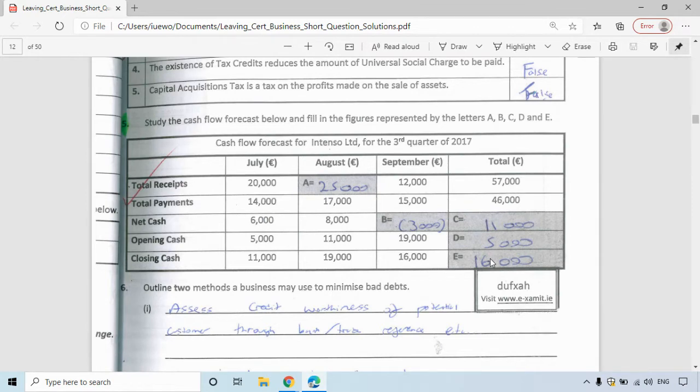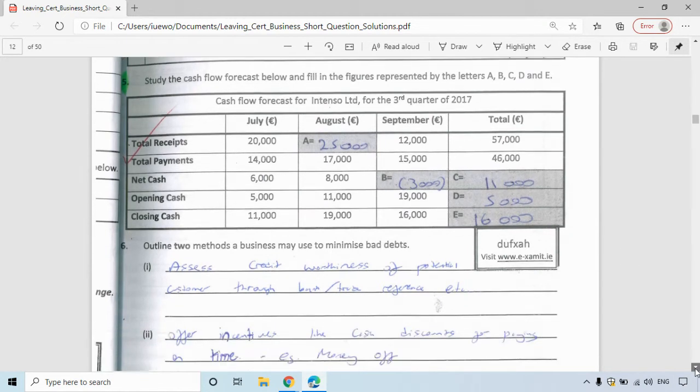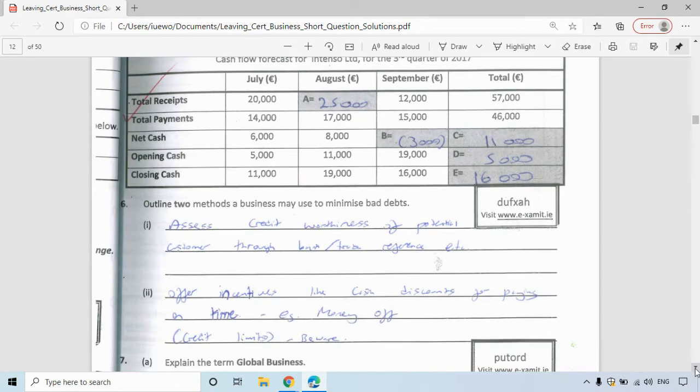Two methods a business may use to minimize bad debts. This is question six. In other words, making sure that you don't have to cover the loss yourself by selling goods on credit to people who can't pay you. You can look at the credit worthiness of potential customers through getting a bank reference or a trade reference from a company they've dealt with before. You can offer incentives like cash discounts for paying on time, like 10% off, money off, whatever. You may also have credit limits. But just beware, it may mean that if you haven't done your homework properly, the business still may not be able to pay you.